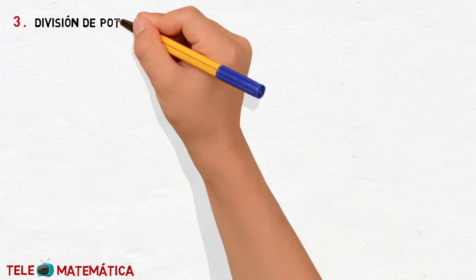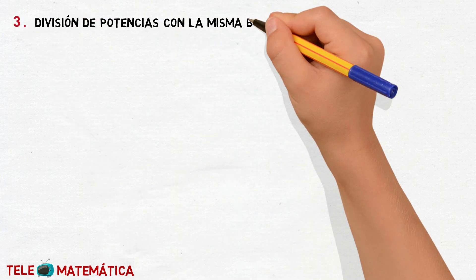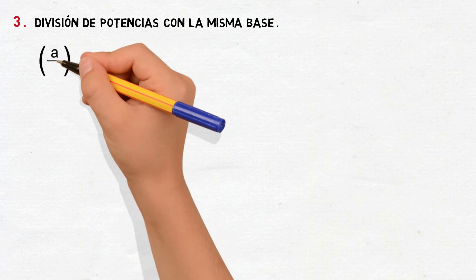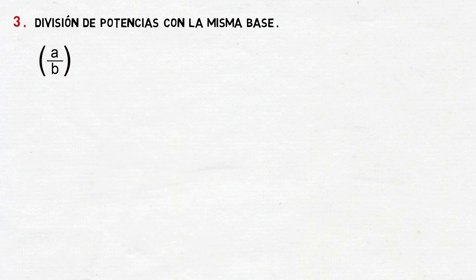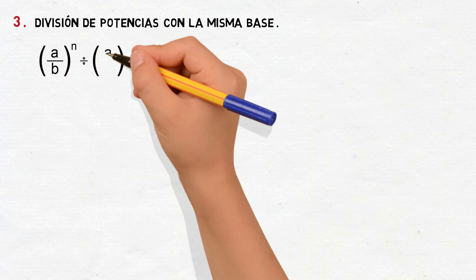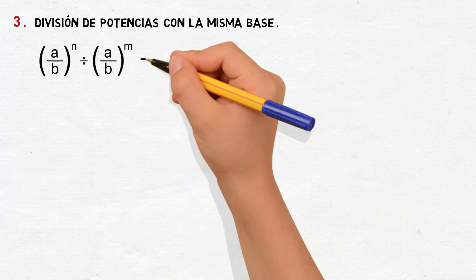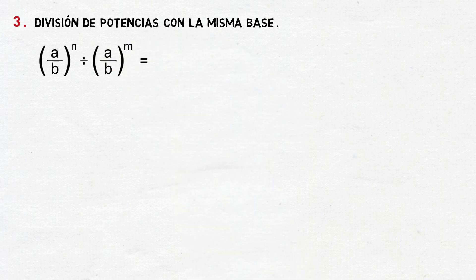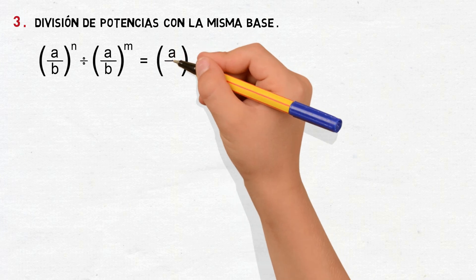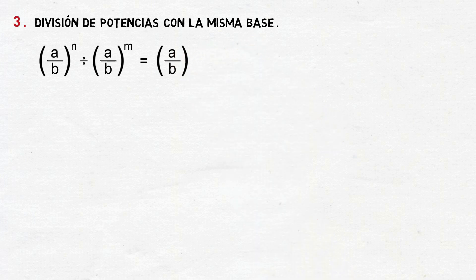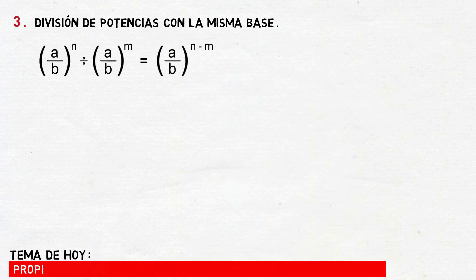Propiedad número 3: división de potencias con la misma base. Esta se define como A dividido para B elevado a la N, dividido para A dividido para B elevado a la M. Esto va a ser igual a conservar la base A dividido para B y restar los exponentes.